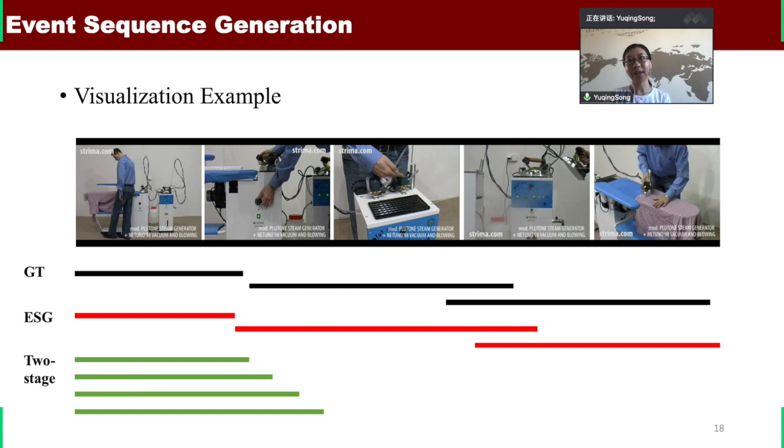This is a visualization example. We can see the proposed event sequence generation model can generate more diverse and accurate events without redundancy, while the two-stage method will select similar high-confidence proposals without considering the temporal relationships between the events.